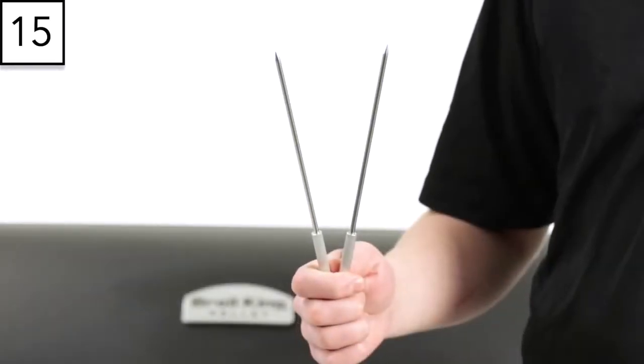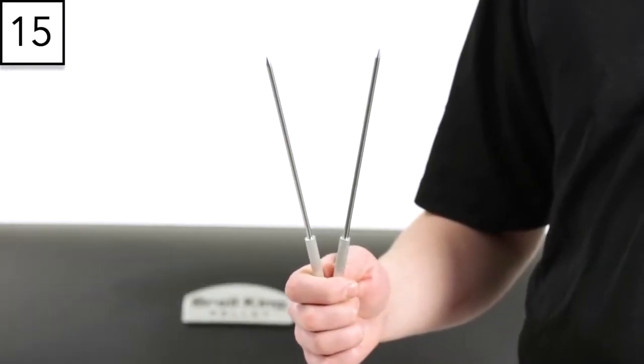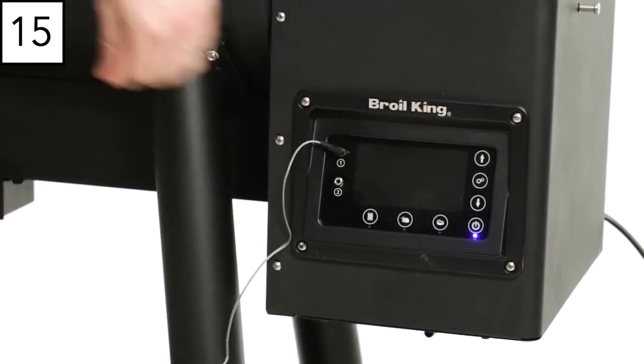Step 15. You'll receive two temperature probes with your pellet grill, which can be inserted into the control panel when you're ready to cook.